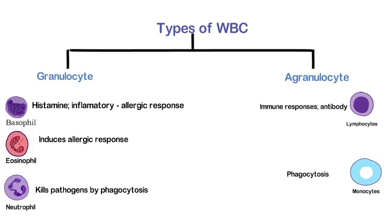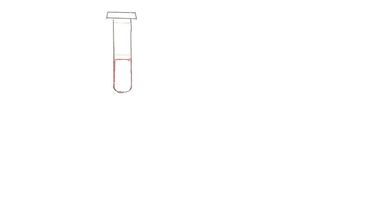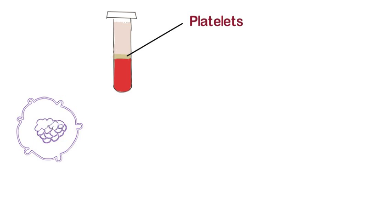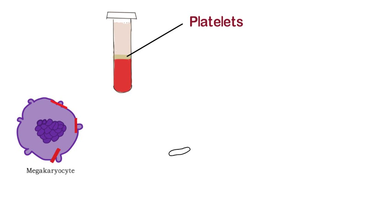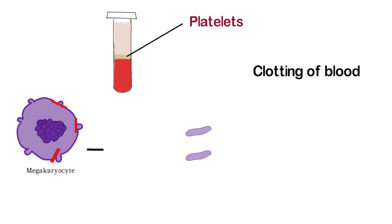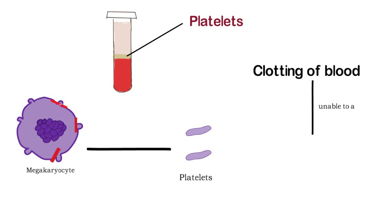Apart from these, the buffer layer also contains another very important component called platelets. They do not have any cell nucleus and are derived from megakaryocytes of the bone marrow. The main function of platelets is hemostasis — that is, the process of blood coagulation at the site of injured blood vessels. Disorders of platelet adhesion give rise to a condition called Bernard-Soulier syndrome.